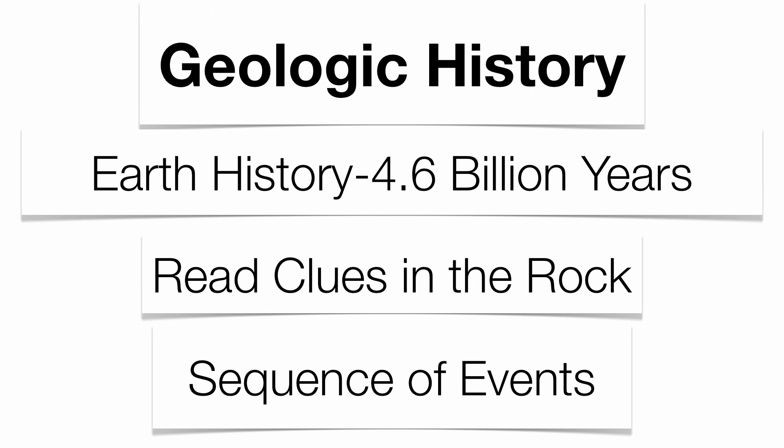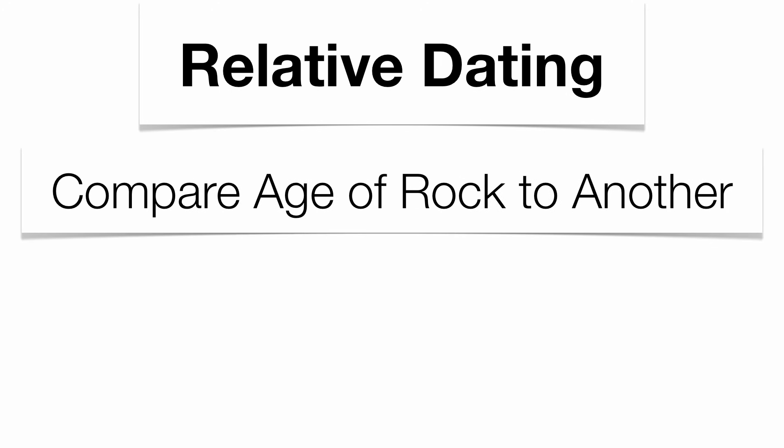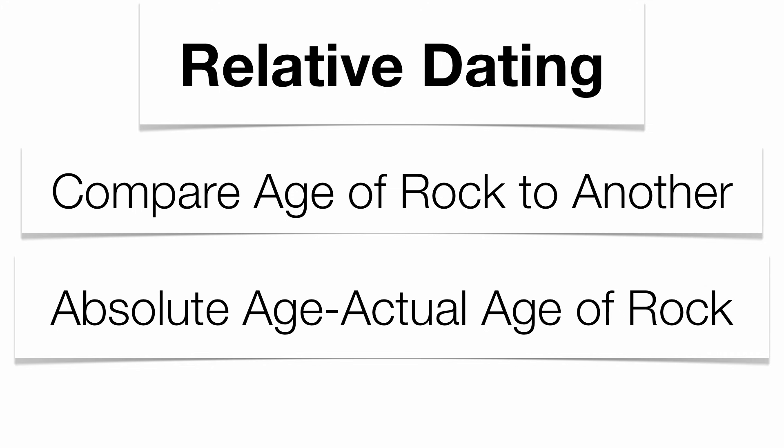What we look for is a sequence of events: what happens first, second, third, fourth, and so on. With geologic dating, you want to compare the age of one rock to another — what we call relative dating or relative age. That's very different from putting an actual numerical value on a rock, which we would call absolute age.